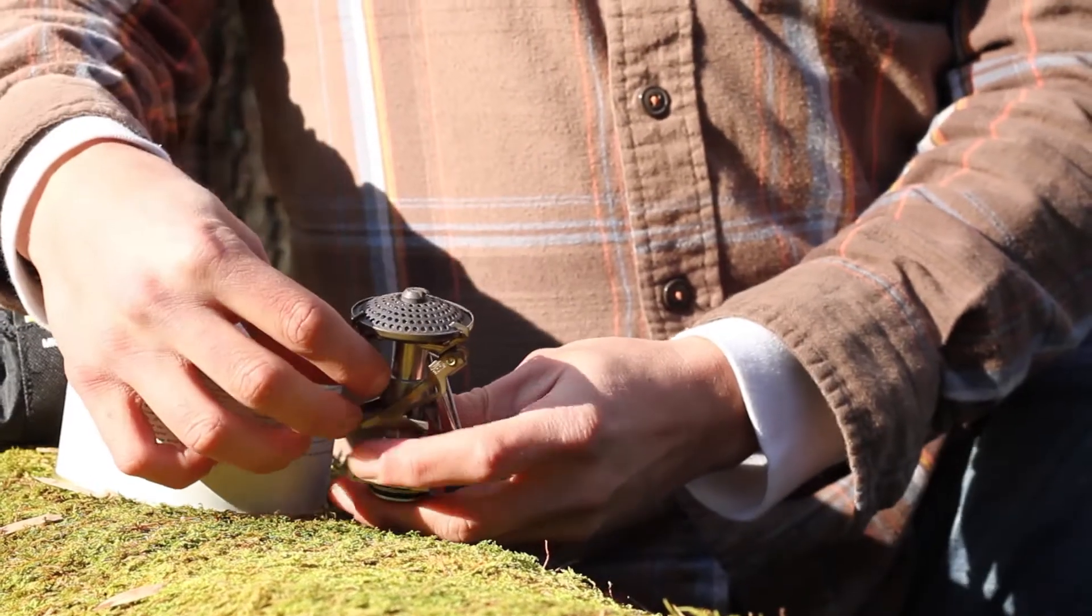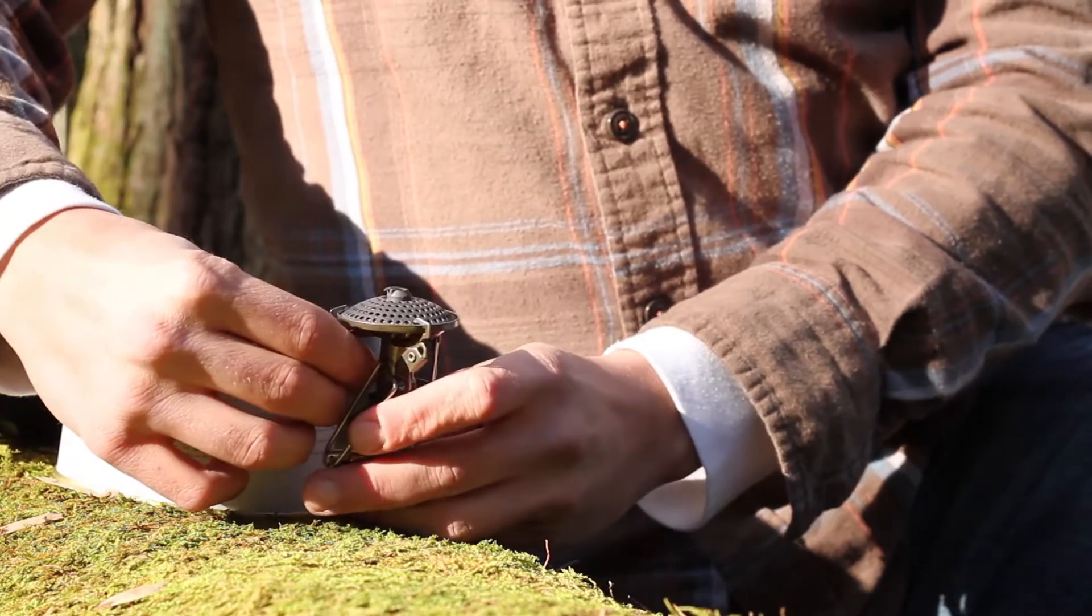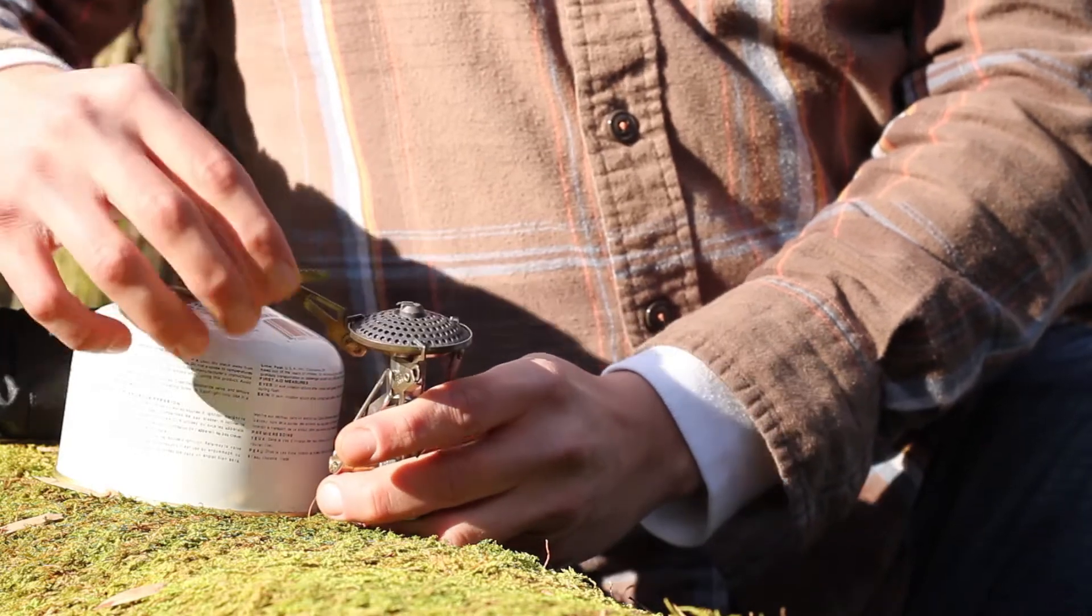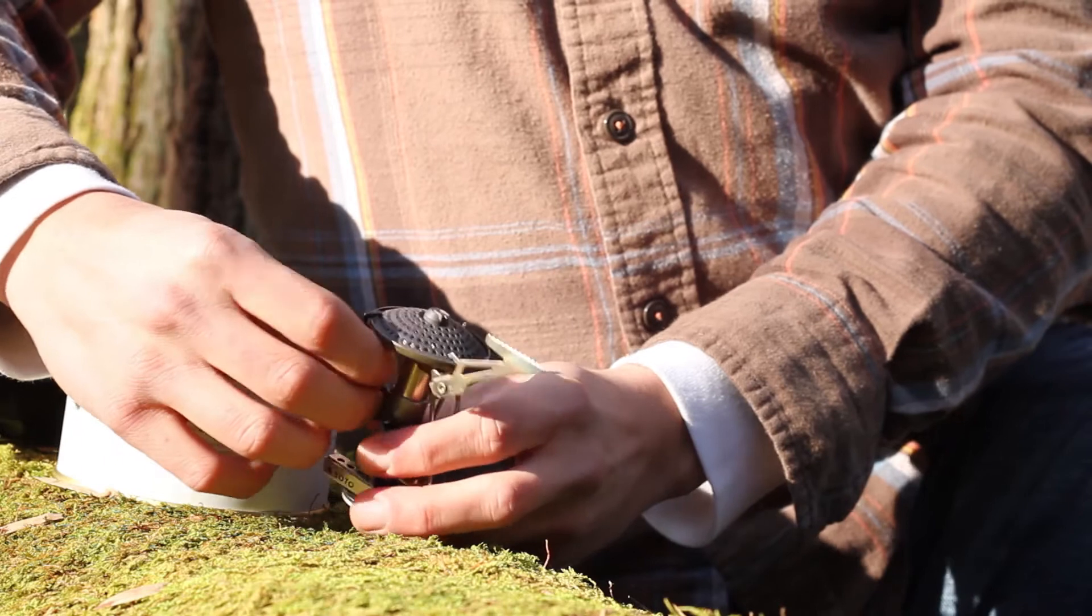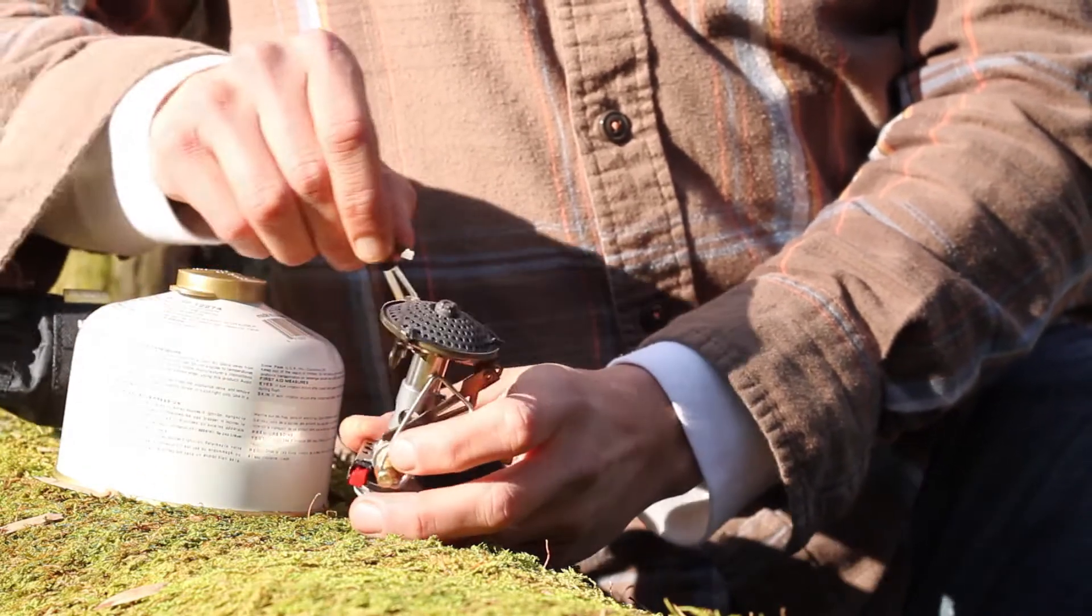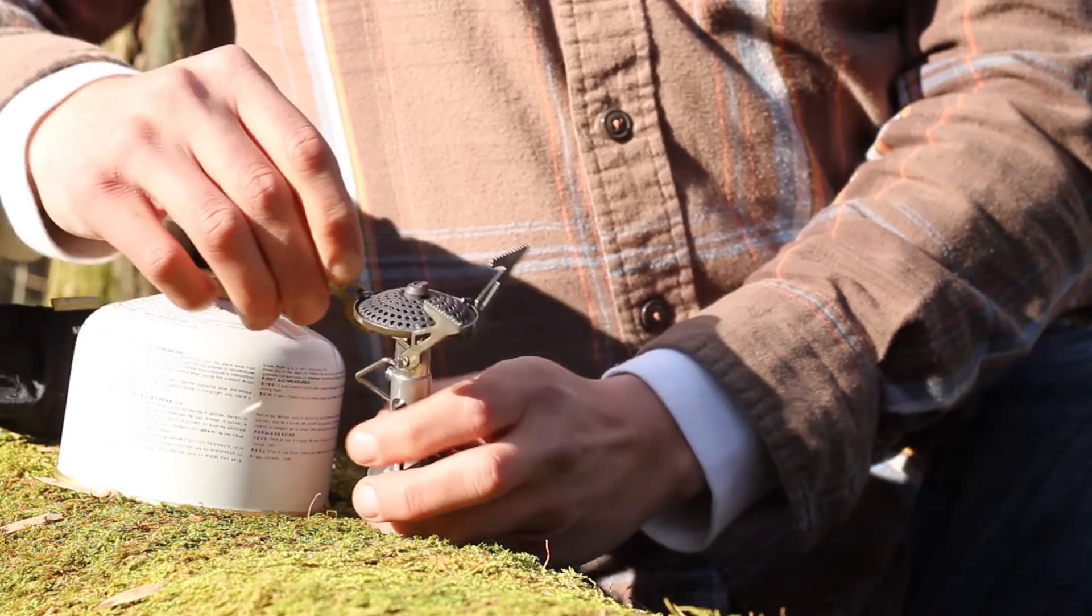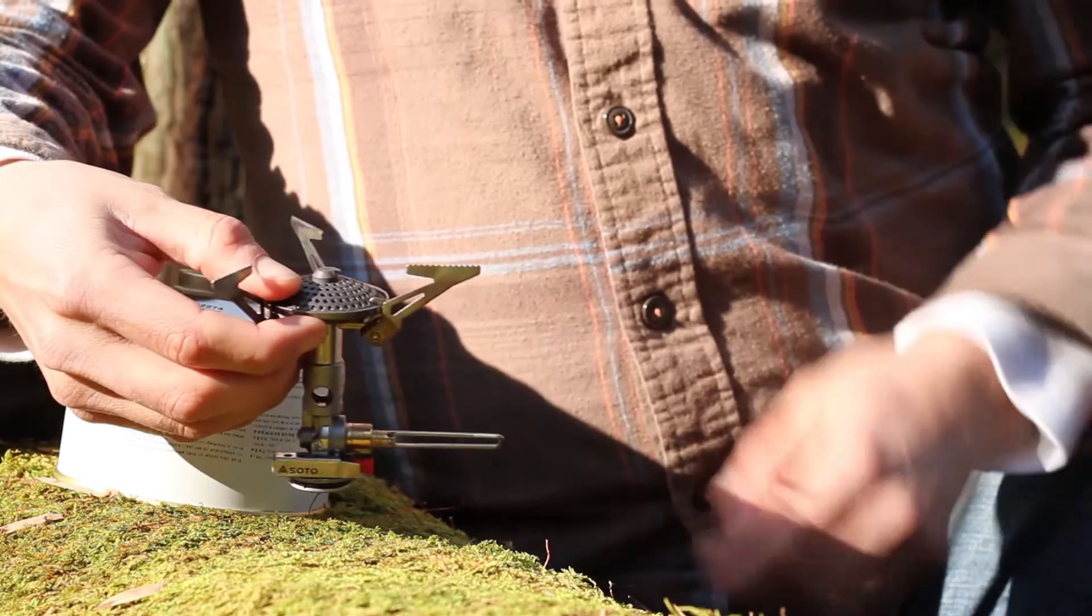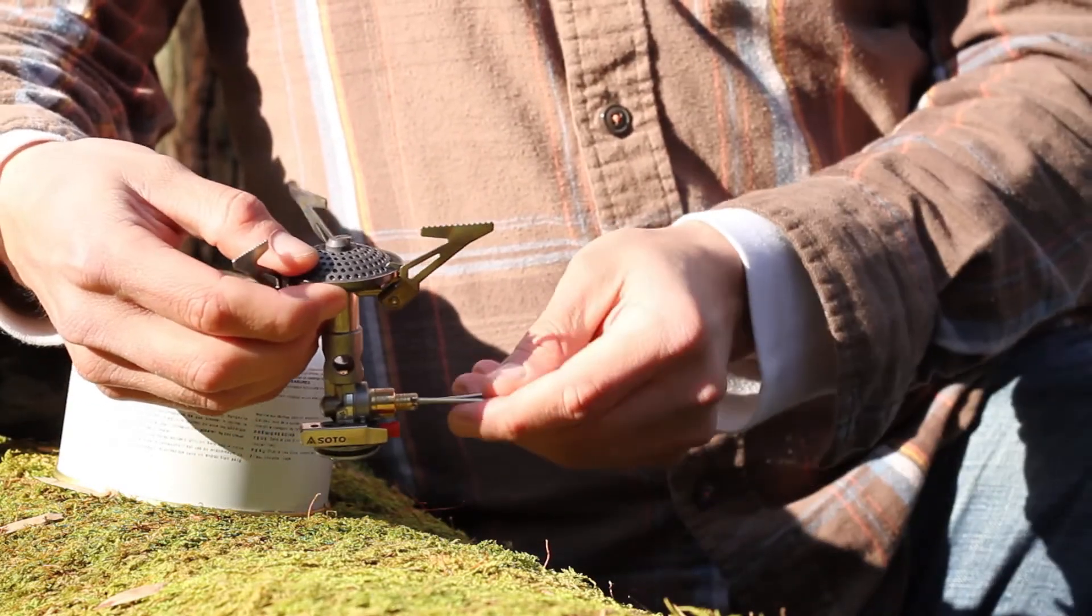There's three feet on the stove. They slide up, out and then down and they lock in place. There's really not too much to it. It's pretty self explanatory, the system, the design.